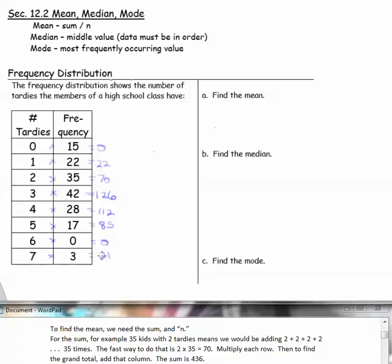Then to find the grand total, which would be the sum, we add that entire column. That's 436, so that is the sum of all the data.